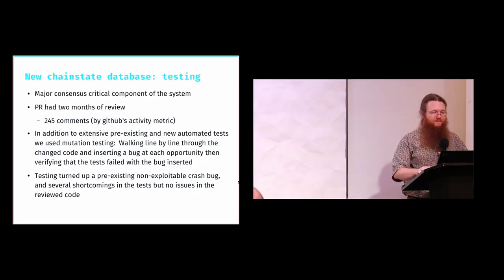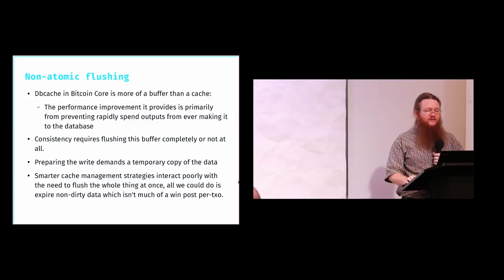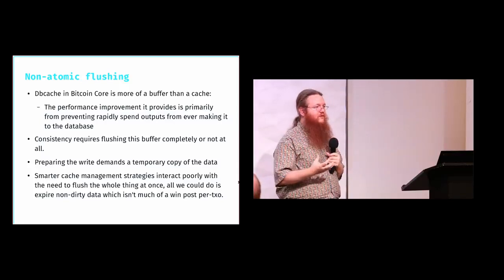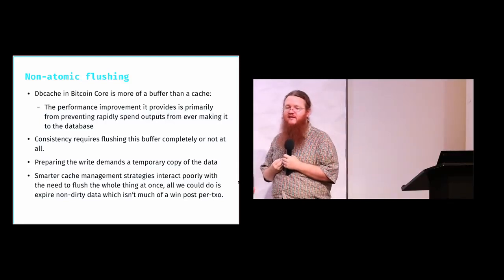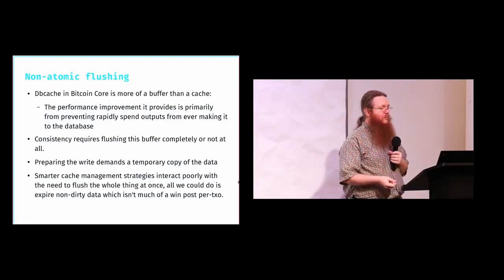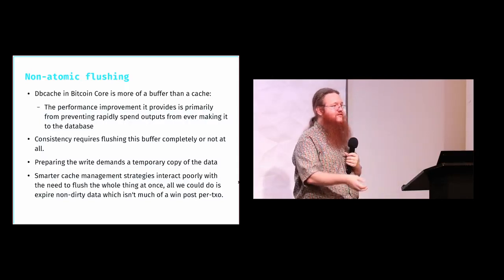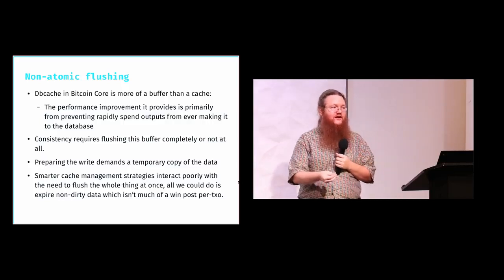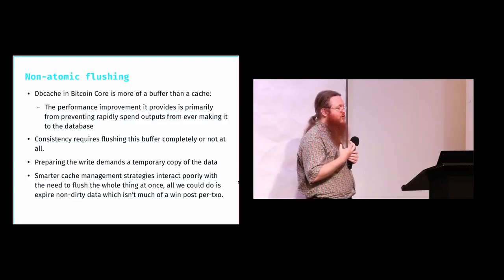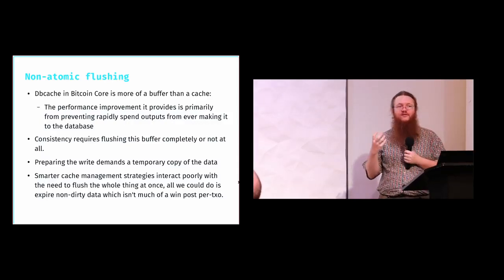A tightly related feature is non-atomic flushing. The database cache in Bitcoin software is really more of a buffer than a cache — the performance improvement isn't from saving you from reading things off disk, which is relatively fast, but from preventing things from being written to disk. For example, if someone makes a transaction and two blocks later spends that output, with a buffer you can avoid ever writing that data out to the database. That's where almost all the performance improvement from the caching infrastructure in Bitcoin comes from — this buffer operation.